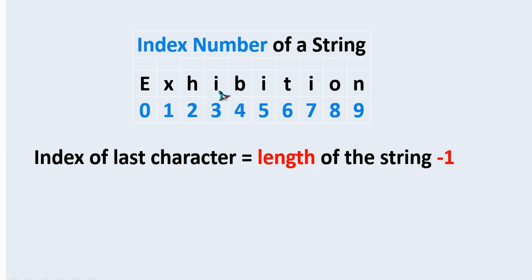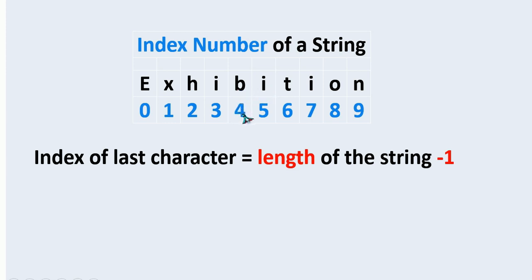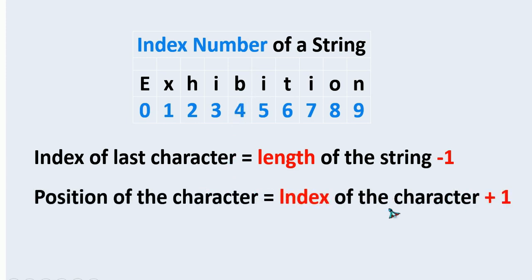In case we need the position of the character, it is going to be 1 more than the index number. For example, if we take the character b here — 1, 2, 3, 4, 5 — it is the fifth character in the string but it will have 4 as its index. So if we want to know the position, we add 1 to the index. Position of the character equals index of the character plus 1.